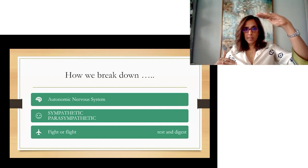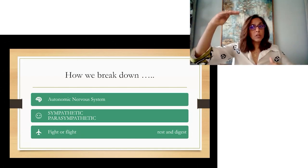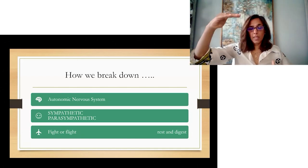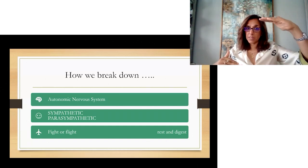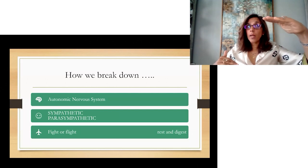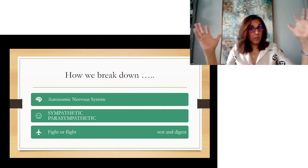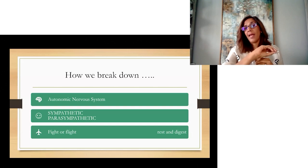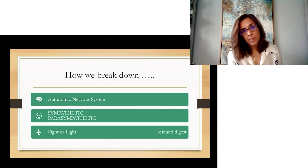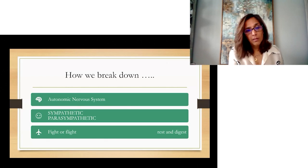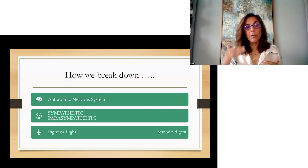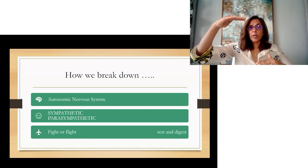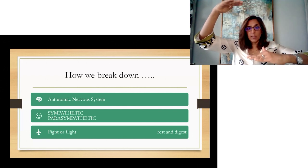After that, we're supposed to activate the parasympathetic system. These two systems can never be up at the same time. When the sympathetic system is up, the fighter flight is up, the parasympathetic system is not. Parasympathetic system is our rest and digest. But we don't do that. We don't do that as humans. We keep going with fight or flight, fight or flight, fight or flight. The rest and digest keeps going down.